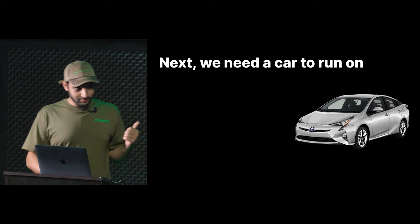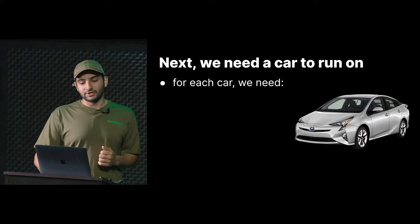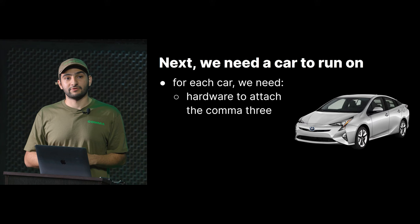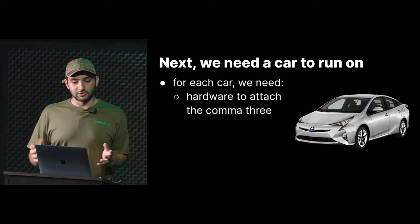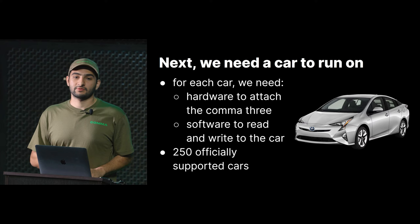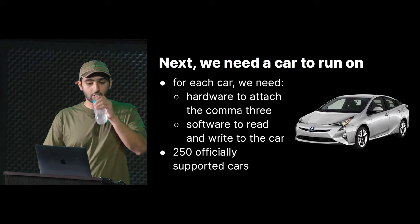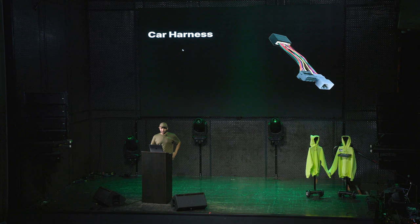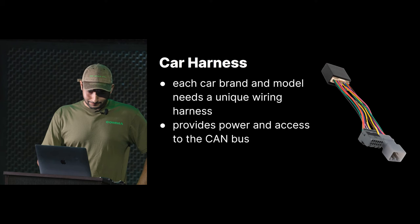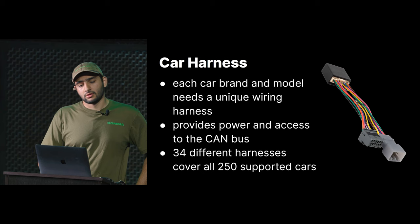For each car, we need hardware to attach the Comma 3 — a little bit more specific than the Comma 3 itself. Every pinout on the camera connector is different. So we have a little bit of special hardware for your car, and then we need some special software to read and write to it. We've done this about 250 times for the 250 officially supported cars, and there are many more in community-supported forks. This is the car harness — one end goes into your car, the other into the Comma 3. They provide power and access to the CAN bus, and that's how we talk to the car. We have 34 different harnesses that cover our 250 supported cars.